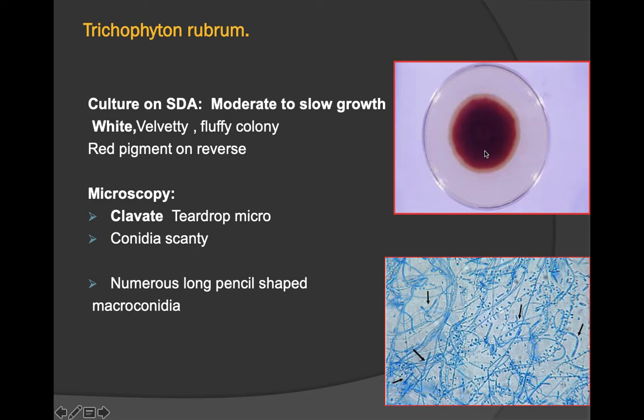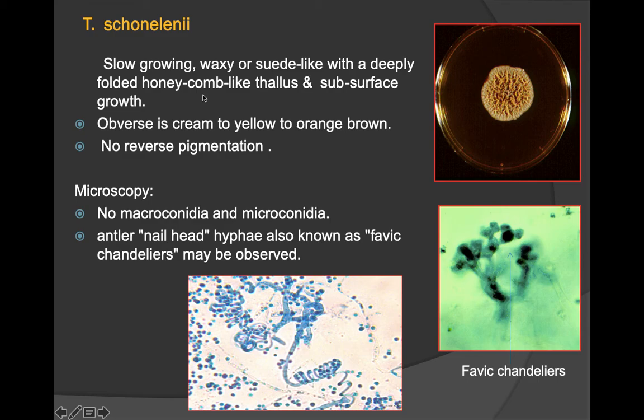Trichophyton rubrum on SDA shows a white velvety fluffy colony; the reverse shows a red pigment. It has moderate to slow growth. Microscopy of T. rubrum shows clavate or teardrop-shaped microconidia arranged in a 'bird on fence' appearance, along with numerous long pencil-shaped macroconidia.